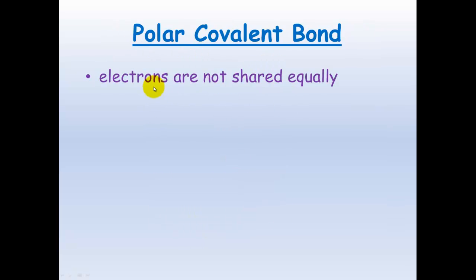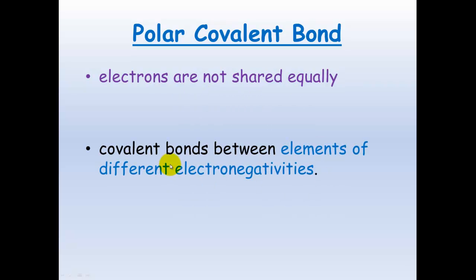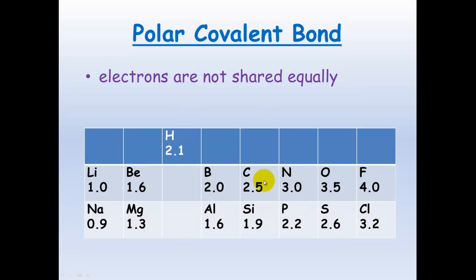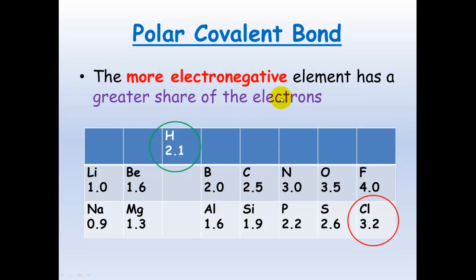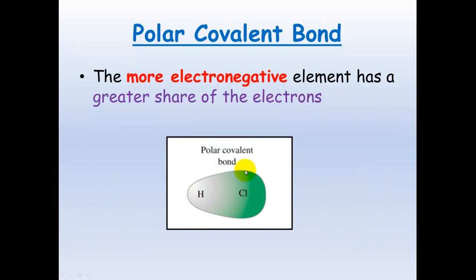Polar covalent bonds, however, occur when electrons are not shared equally. This happens with elements of different electronegativities — whenever two different elements are covalently bonded, the electrons will not be shared equally. The more electronegative element gets a greater share of the electrons. Comparing hydrogen and chlorine: chlorine has a higher electronegativity, so chlorine has a greater share of the electrons.